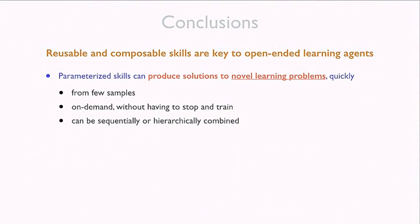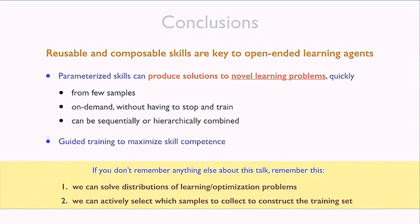To conclude: we believe the idea of reusable parameterized skills is useful for constructing open-ended agents — agents not confined to a factory floor. If an agent encounters a doorknob it never saw before, it can't just freeze; it needs to rapidly produce at least a decent estimate of how to open the door, and that's what skills do. We have evidence that parameterized skills can produce solutions to novel problems very fast from few examples, and we show it's possible to do guided training when acquiring the skill.